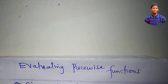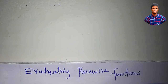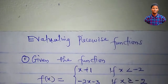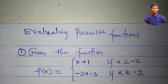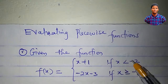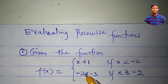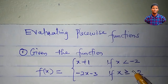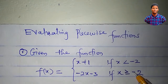In this tutorial I'll teach you how to evaluate piecewise functions. A piecewise function is a function that has multiple or several sub-functions and each sub-function is applied to a specific interval. So f(x) is equal to x plus 1 if x is less than minus 2, and minus 2x minus 3 if x is greater than or equal to minus 2. This is a piecewise function.